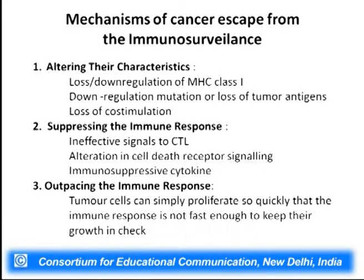Alternatively, cancer cells can suppress the immune response. The signal to cytotoxic T lymphocytes becomes defective, there is alteration in cell receptor signaling, receptors are modulated, or immune-suppressive cytokines are released — all trying to appear as normal as possible. Another category is outpacing the immune response. Tumor cells multiply and grow much faster than immune cells that are generating a clonal population to find them. That is why growth gets out of control and the body does not see the problem coming.